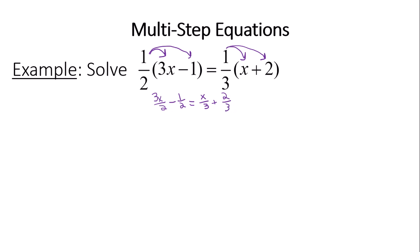The next step is to get rid of the fractions. Since I have 2 in the denominators on the left side and 3 in the denominators on the right side, I need to multiply by a number divisible by both 2 and 3. The best option here is 6, so we multiply by 6 (or 6 over 1).